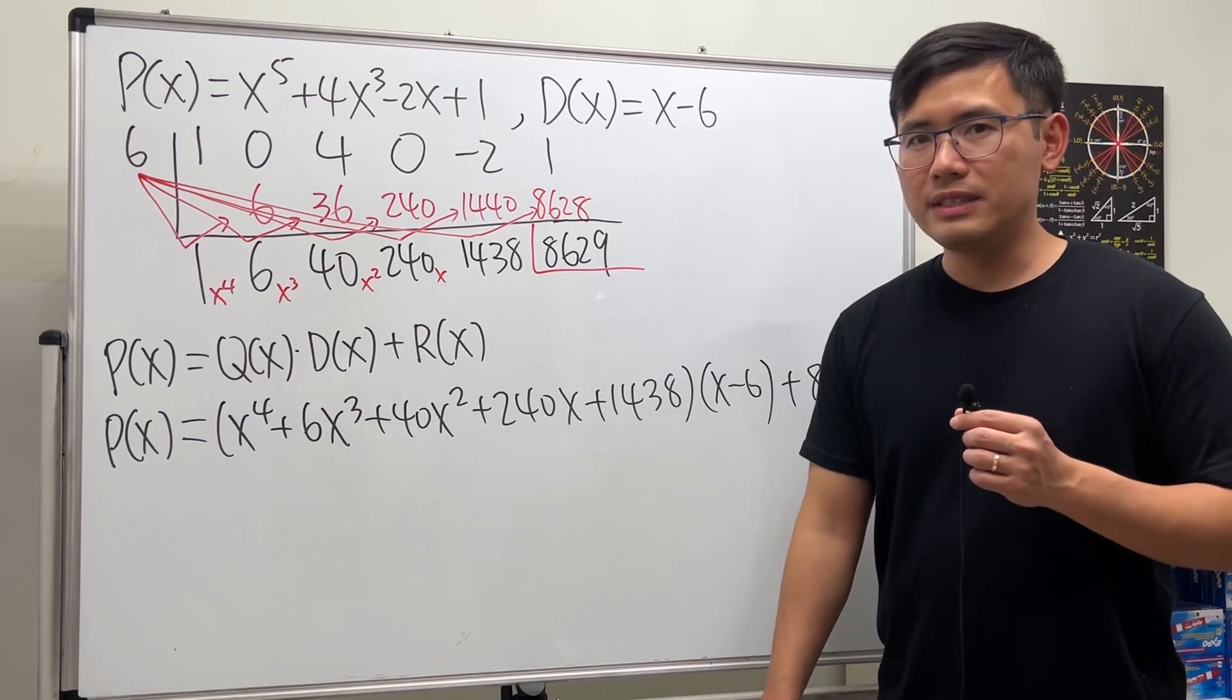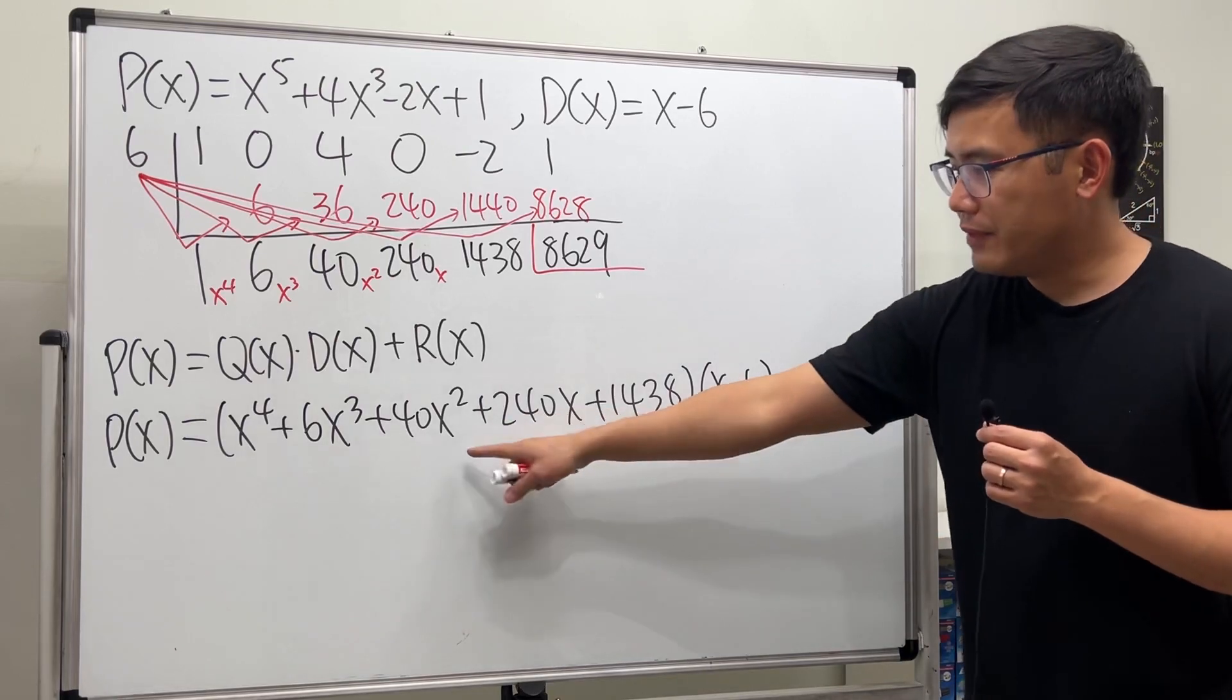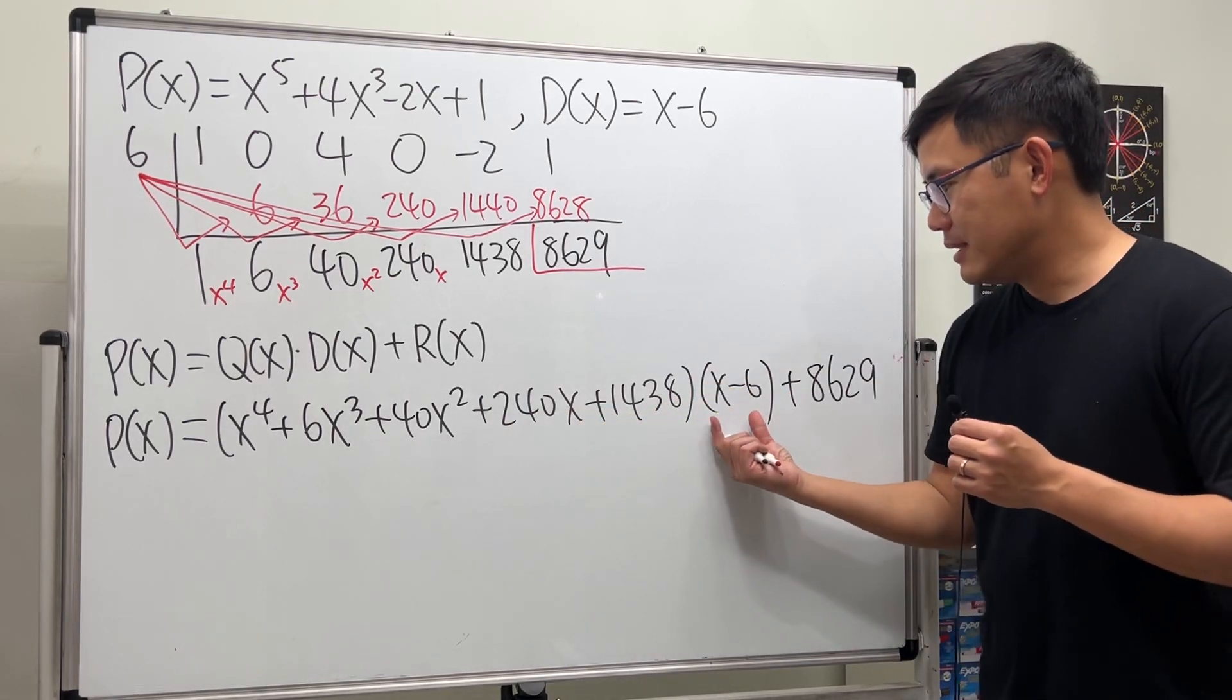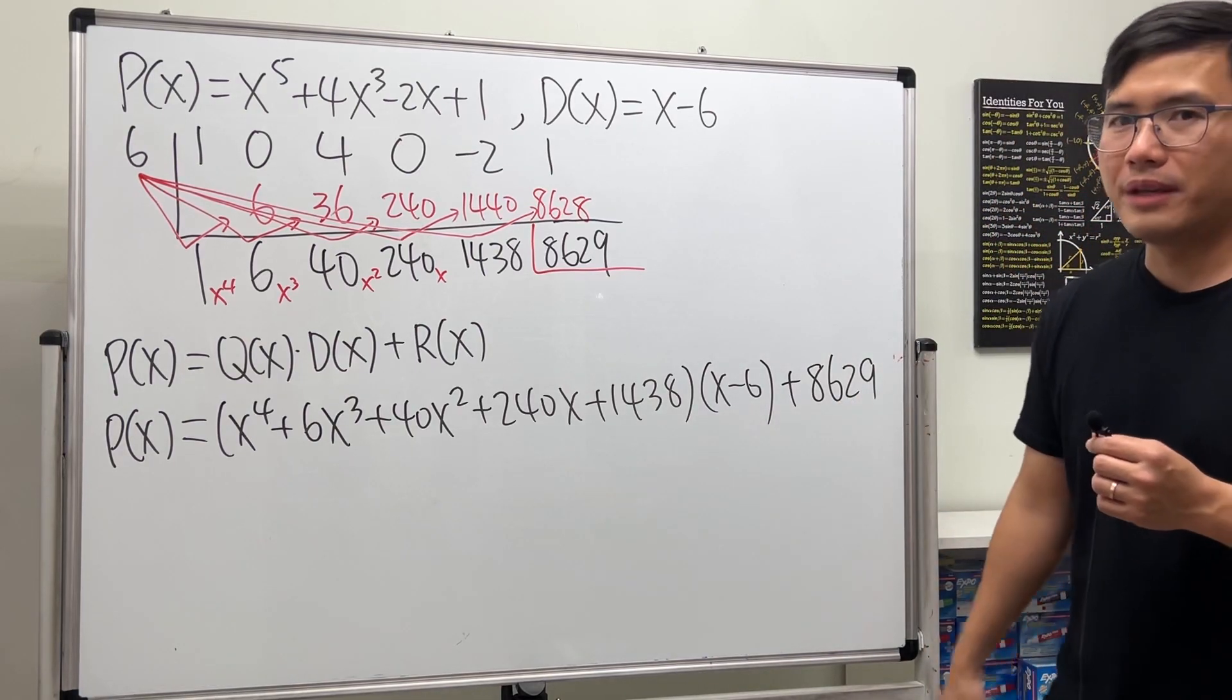And now here's one fun thing that we can do once we have this expression. Notice that we have this giant factor times this little factor, and this is just x minus 6, and we have this right here for the remainder.